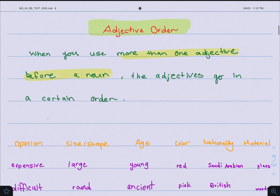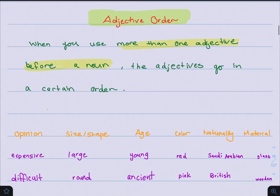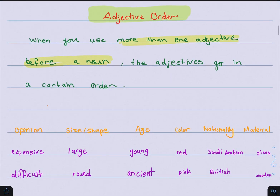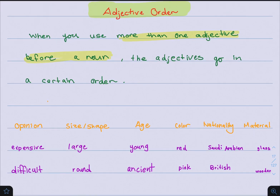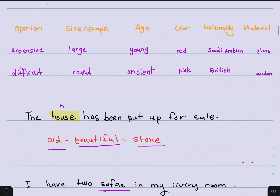Now, the first thing we will be looking at is adjective order. Before we talk about adjective order, I'd like to clarify that adjectives are words that are used to describe a noun. Sometimes there is more than one adjective to describe a noun, and these adjectives should go in a certain order. So when we use more than one adjective before a noun, the adjectives go in a certain order. The first thing is to start with opinion — for example, expensive, difficult, beautiful, nice.